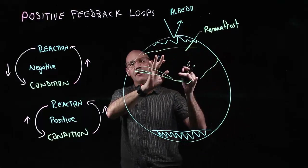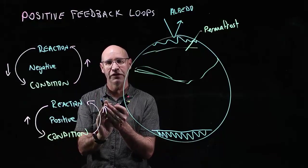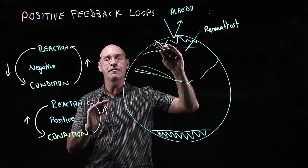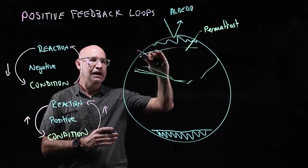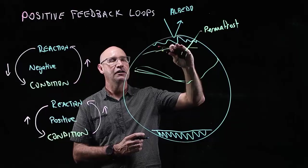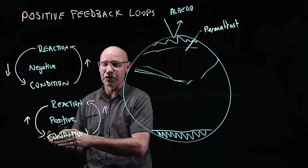We've got another positive feedback loop because as the temperature of the Earth gets hotter, more of that ice melts. Therefore, less ice is available to reflect sunlight, so the temperature of the Earth gets warmer, which melts more ice.